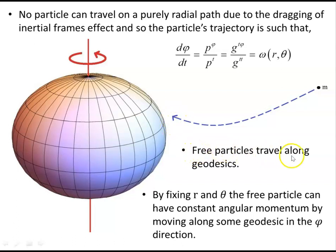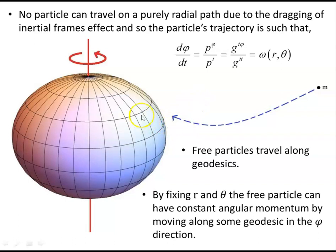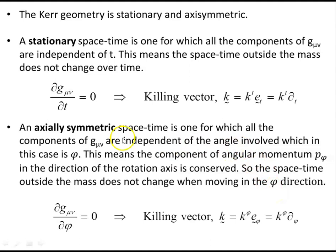A free particle travels along geodesics. By fixing r and theta, the angular velocity can be held constant, and the free particle can have constant angular momentum by moving along some geodesic in the phi direction. So as long as it's moving in the phi direction, it can have constant angular momentum for that component.